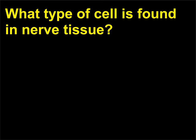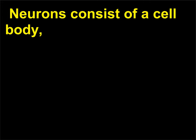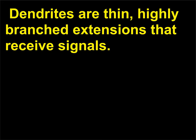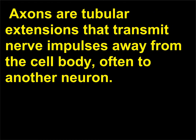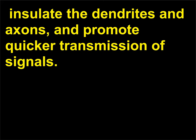What type of cell is found in nerve tissue? Neurons are specialized cells that produce and conduct impulses, or nerve signals. Neurons consist of a cell body, which contains a nucleus and two types of cytoplasmic extensions: dendrites and axons. Dendrites are thin, highly branched extensions that receive signals. Axons are tubular extensions that transmit nerve impulses away from the cell body, often to another neuron. Nerve tissue also has supporting cells called neuroglia or glial cells, which nourish the neurons, insulate the dendrites and axons, and promote quicker transmission of signals.